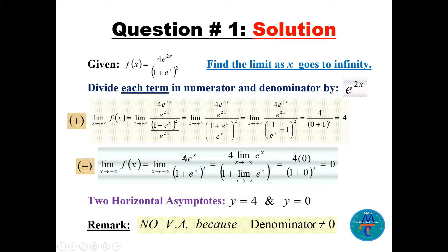For the limit as x goes to minus infinity, we don't need to divide. Since e^(minus infinity) equals 1/e^(infinity), that goes to 0. So the numerator gives 4 times 0 equals 0, and the denominator gives (1 + 0)^2 = 1. The result is 0. Therefore, this function has two horizontal asymptotes: y = 4 and y = 0. There are no vertical asymptotes because no value of x makes the denominator zero.